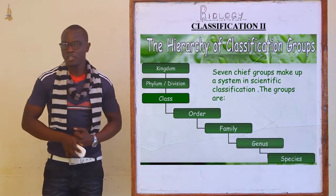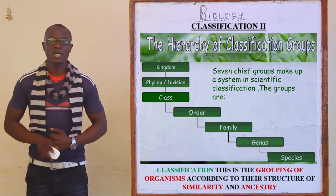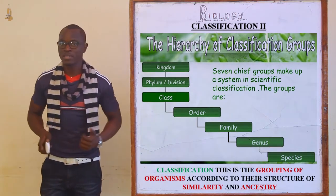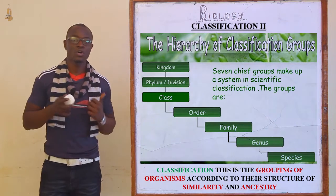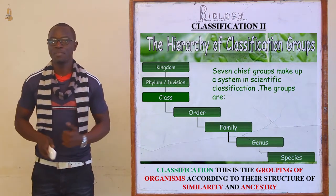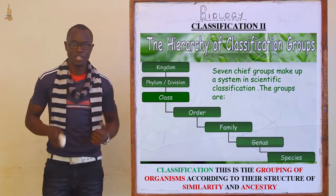So what did we say classification is? We define classification as the grouping of organisms and placing them into correct groups based on ancestry, behavioral characteristics, and adaptations.